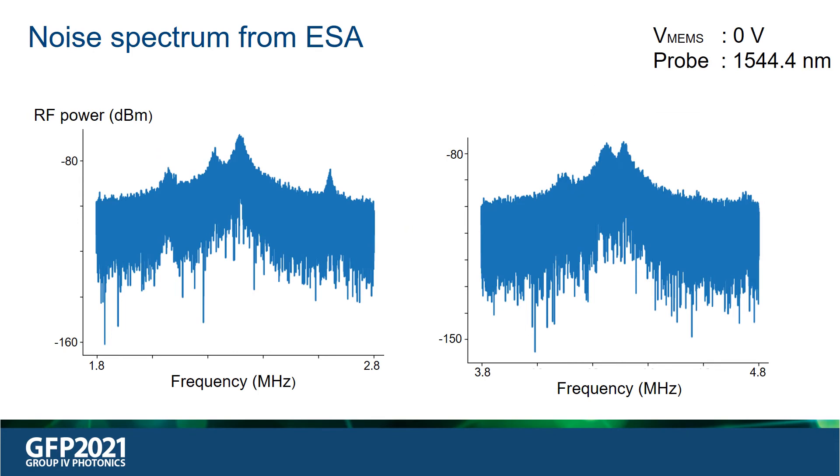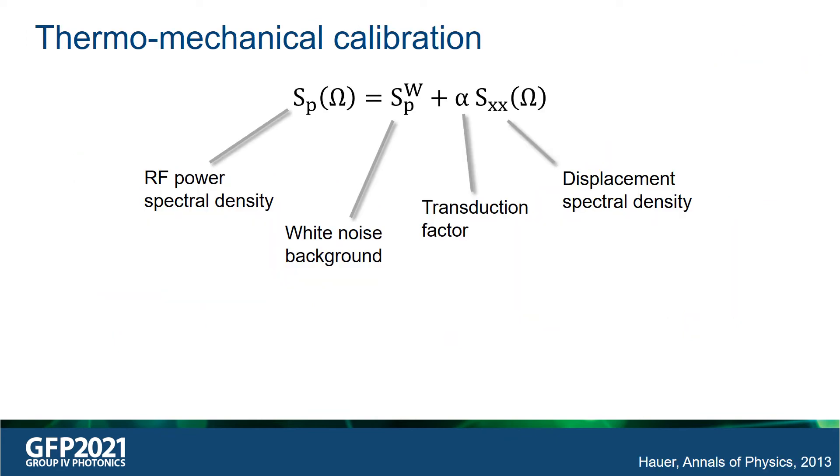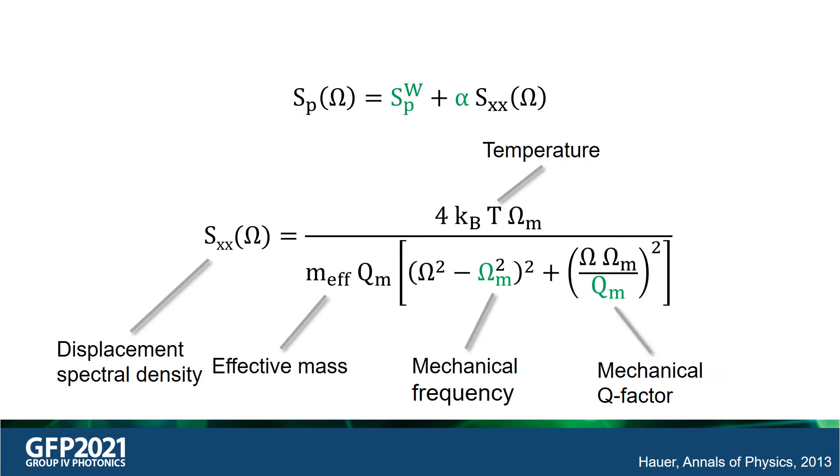Here, I have plotted the RF noise spectrum obtained from the ESA when the drive voltage is set to 0 volts and the probe is parked at 1544.4 nanometers. From the plot, we observe that there are several different peaks. Each of them corresponds to a different mechanical mode of either the waveguide or the nanobeam. By fitting these peaks using the equations shown here, where Sp is the RF power spectral density measured from the ESA, Sp_w is the white noise background measured on the ESA, alpha is the transduction factor, and Sx is the displacement spectral density which is obtained from the equipartition theorem and given by the following equation.